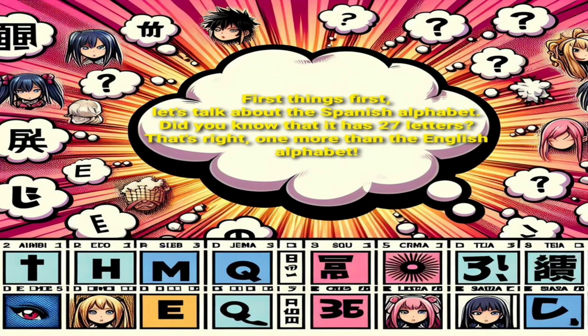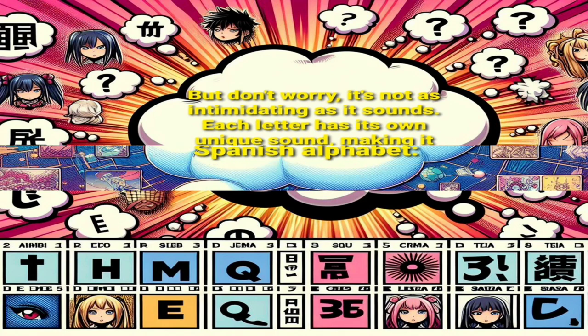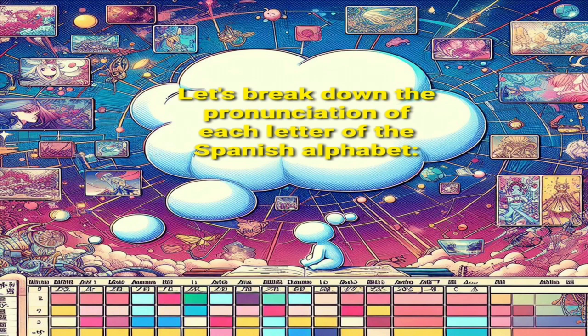First things first, let's talk about the Spanish alphabet. Did you know that it has 27 letters? That's right, one more than the English alphabet. But don't worry, it's not as intimidating as it sounds. Each letter has its own unique sound, making it easier to learn and pronounce. Let's break down the pronunciation of each letter of the Spanish alphabet.